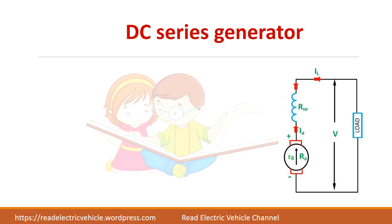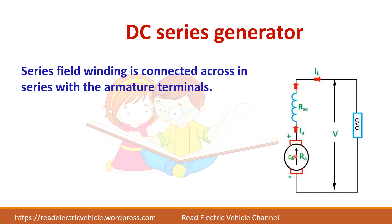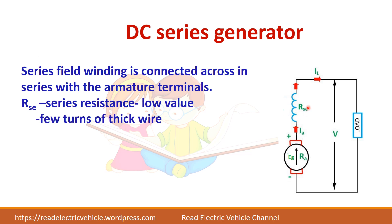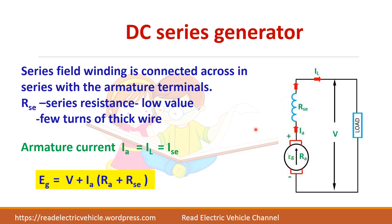Next we have the DC series generator, where the field winding is connected in series with the armature. The series resistance has a very low value — it is designed with a few turns of thick wire. Since all elements are in series, the current remains the same throughout: Ia = I_series = IL. The generated EMF is EG = V + Ia × (Ra + R_sc), since there are two resistances — armature resistance and series resistance.